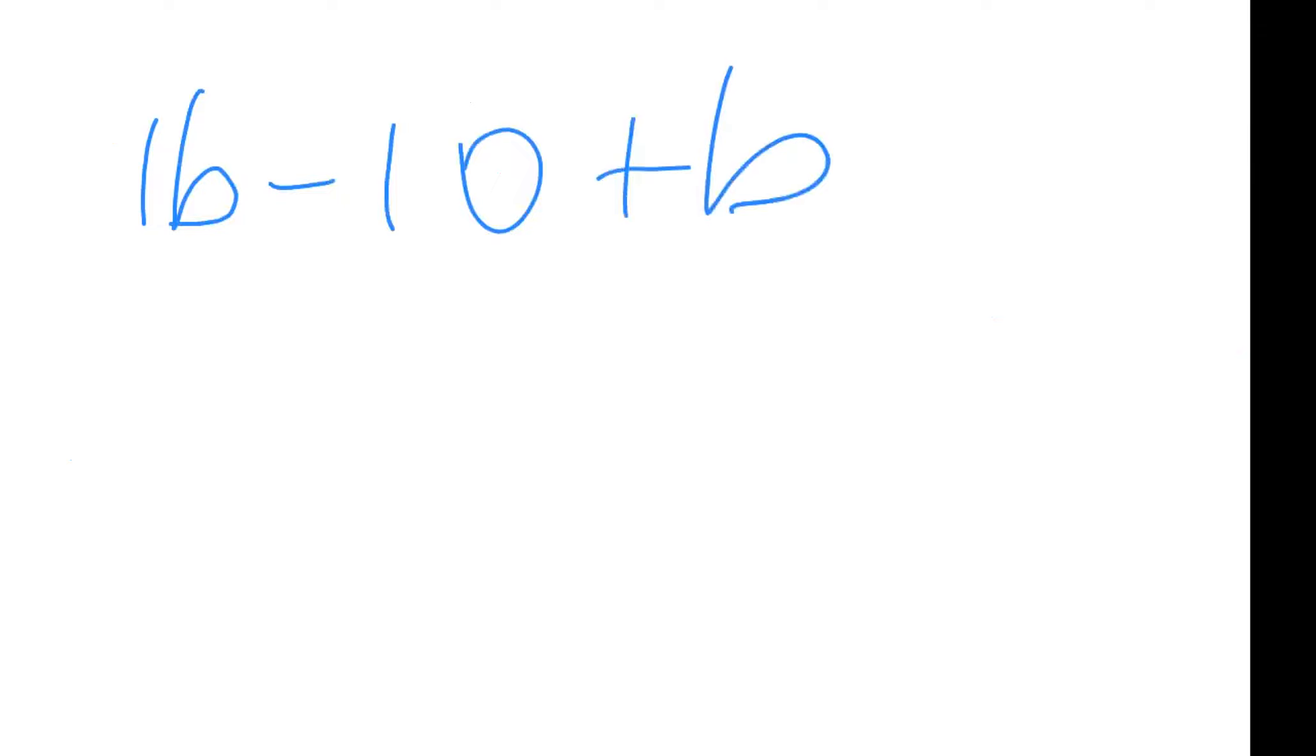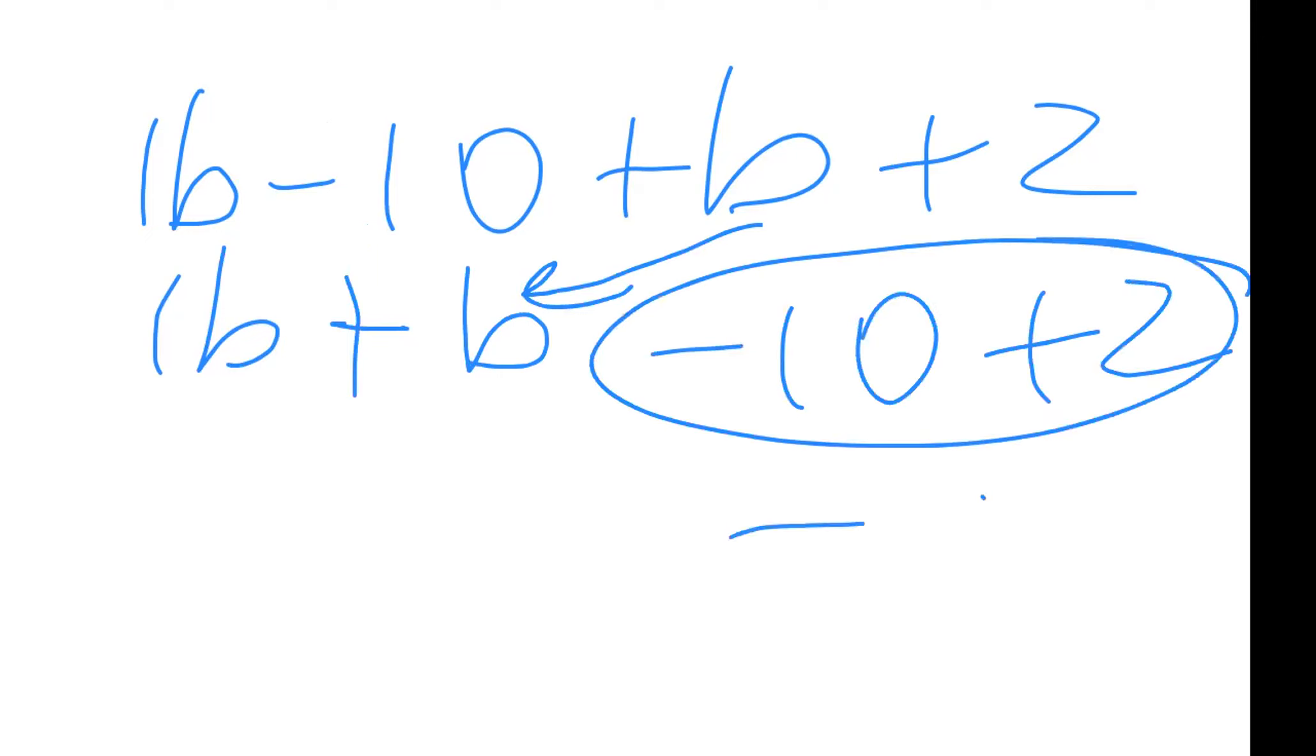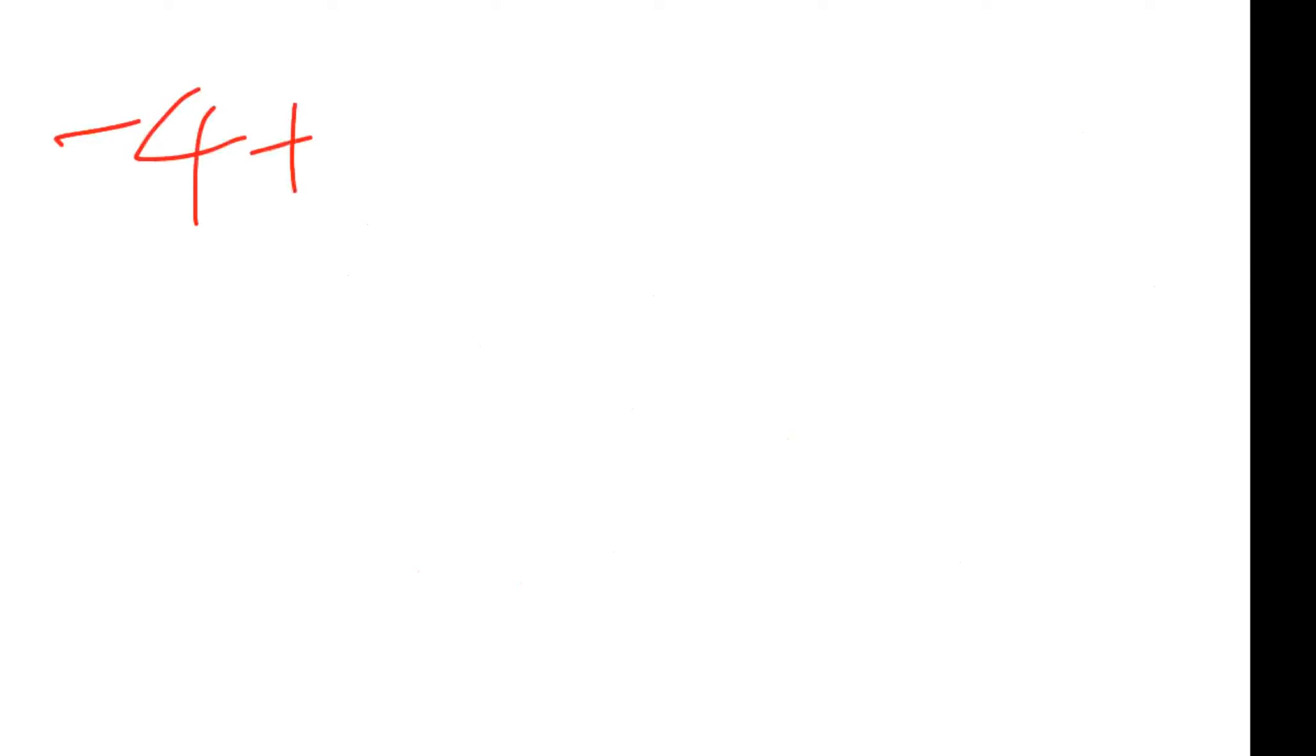And we are coming down, our next question, 1b minus 10 plus b plus 2. This is where some person said alright then I'll put the v's together, 1b, and then they wrote minus b. This minus right here is for the 10. So this is a positive b right here, it has to be positive b. Minus 10 plus 2 gives negative 8. 1b plus 1b, different sign for that, and so you would actually get 2b minus 8.